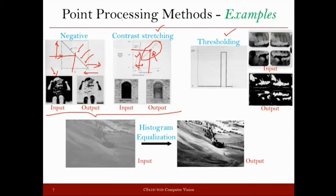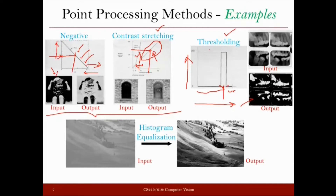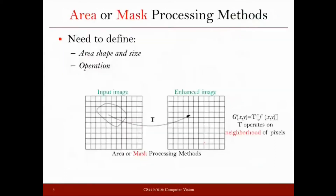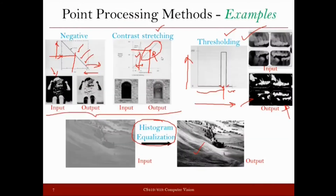In the case of thresholding, which is another point-based operation, any intensity lying between a certain range is passed to the output as 255, but all other intensities are made zero. So on the input side you have input intensities and on the output side you have output intensities — for intensities outside the range the output is zero, and for intensities in the specified range the output is 255. Similarly, there is an operation called histogram equalization, which we will see in detail — it is also a point-based operation where to get the new intensity for a particular pixel, you just need to know its old intensity value.